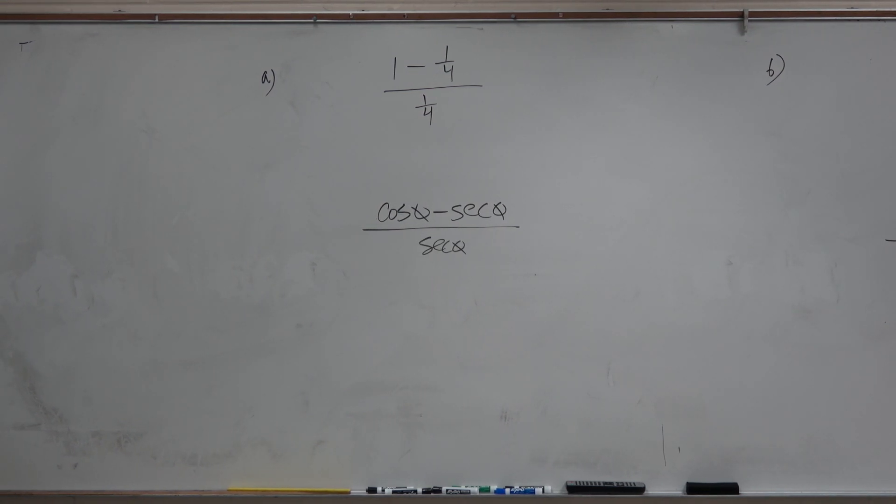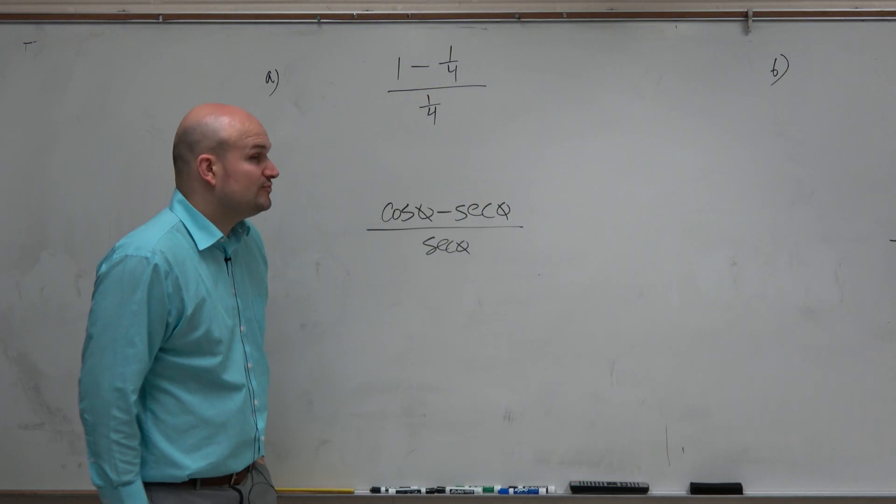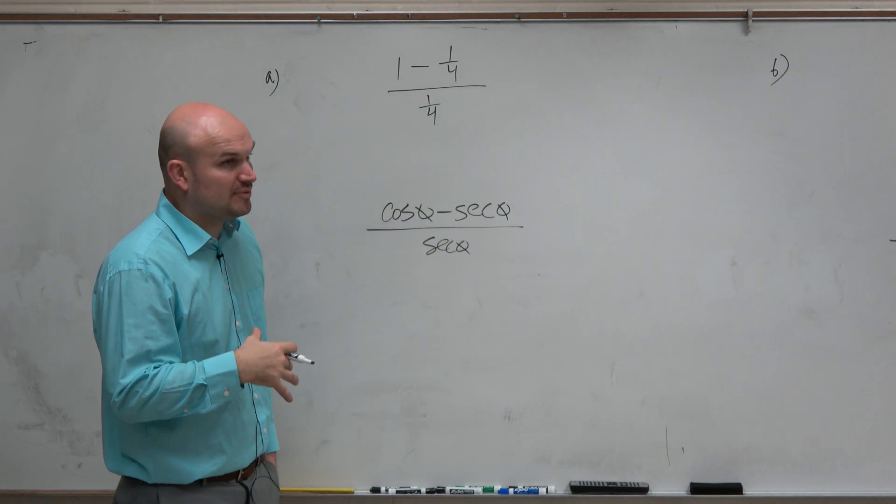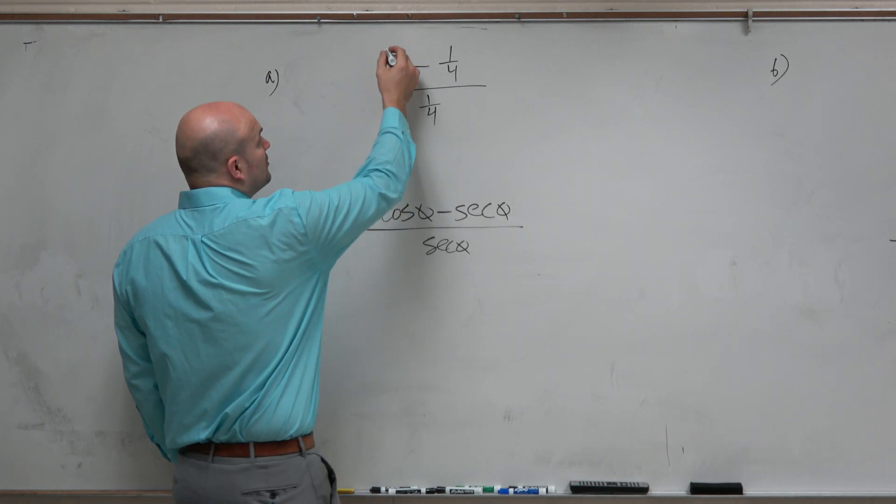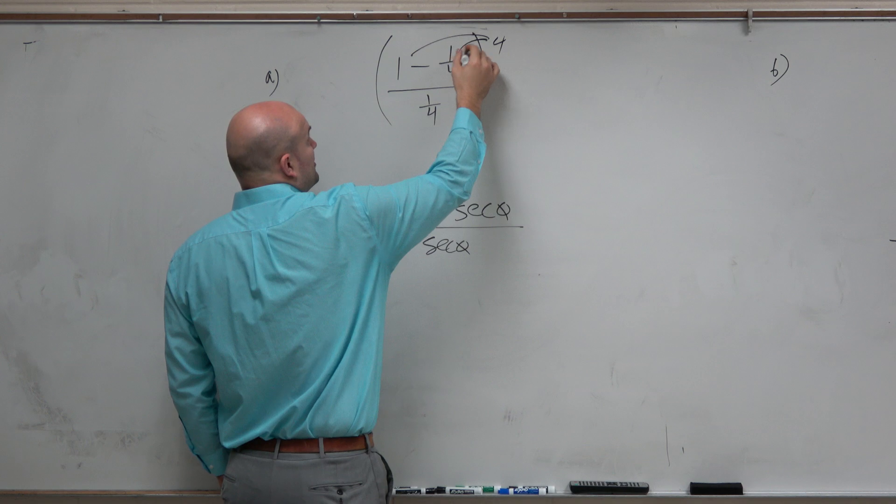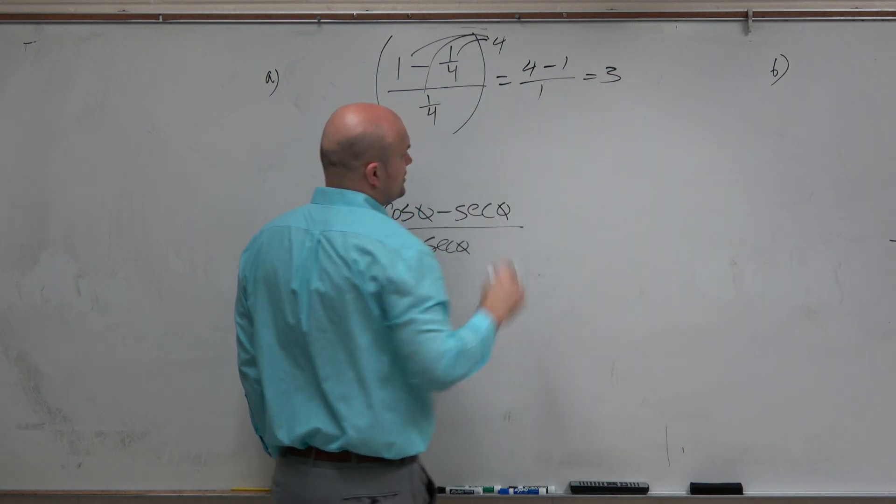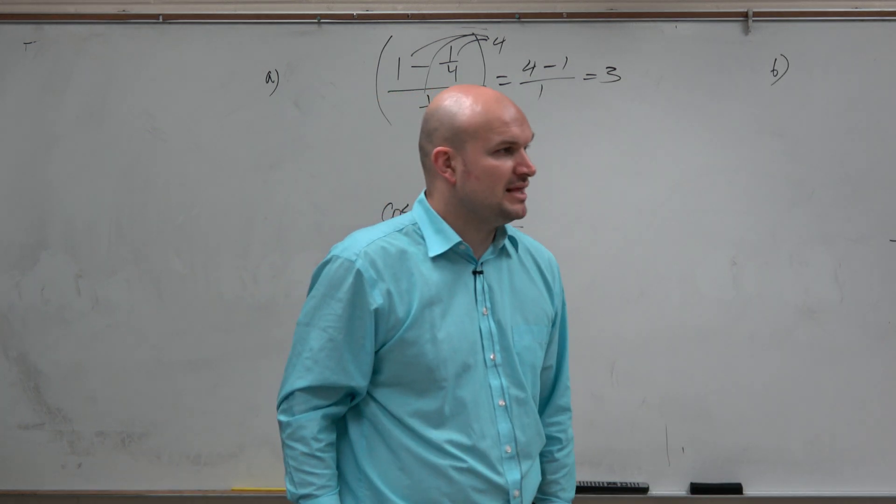Now, if you guys remember from our rational functions days, this is what we call a complex fraction. And the way that I like to eliminate complex fractions or simplify them was to multiply by the LCD, which in this case would be 4. When I multiply everything times 4, I get 4 minus 1 over 1, which equals 3. Fair enough, rather easy.